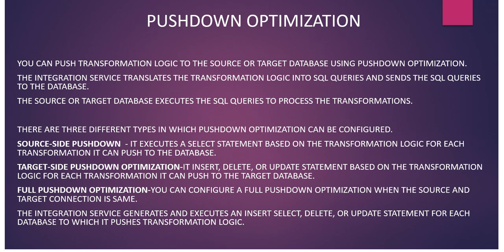There are three types: source-side pushdown optimization, target-side pushdown optimization, and full pushdown optimization. In source-side optimization, it executes the SELECT statement based on the transformation logic for each transformation it can push to the database. In target-side, it performs INSERT, DELETE, or UPDATE operations into the target database. In full pushdown optimization, you can configure it when the source and target connection is the same, and it executes all statements — INSERT, SELECT, DELETE, UPDATE — for each database to which it pushes the transformation logic.